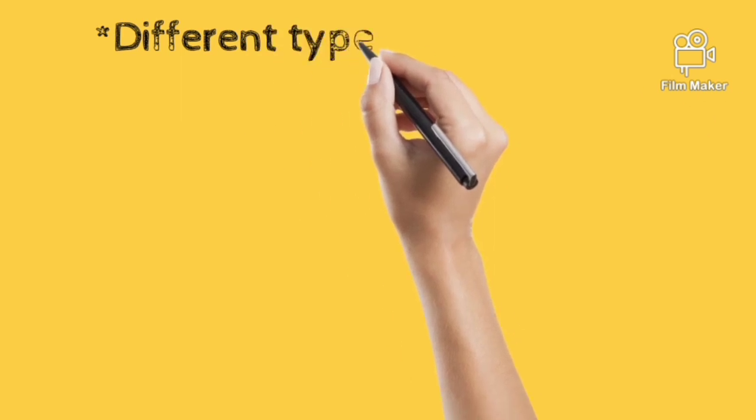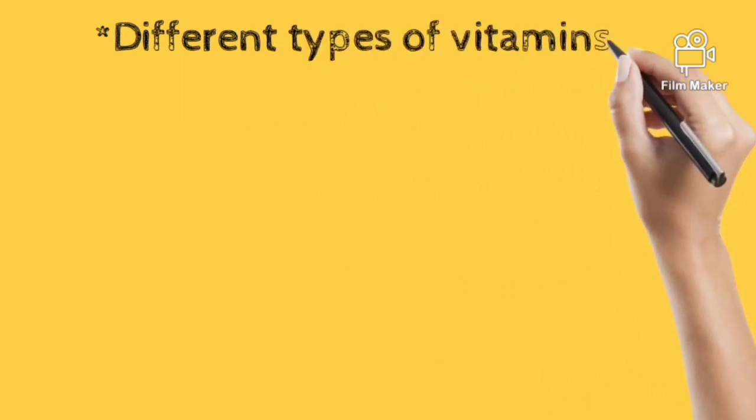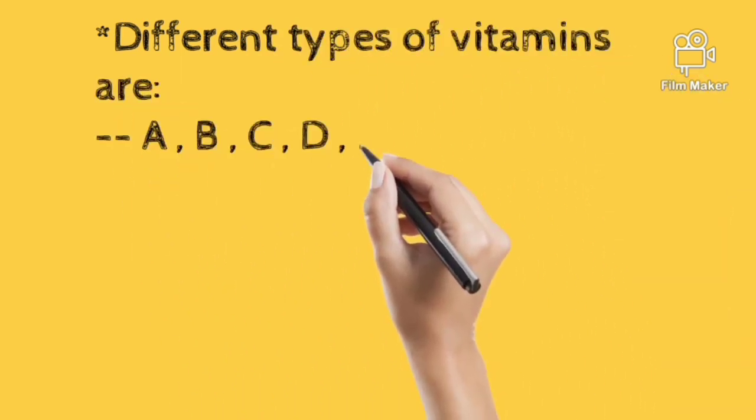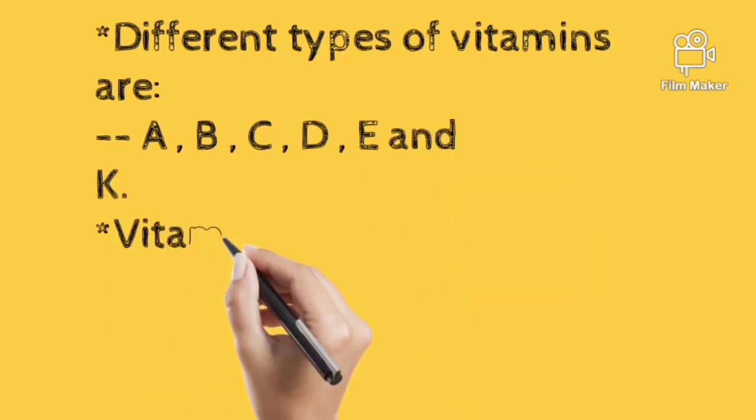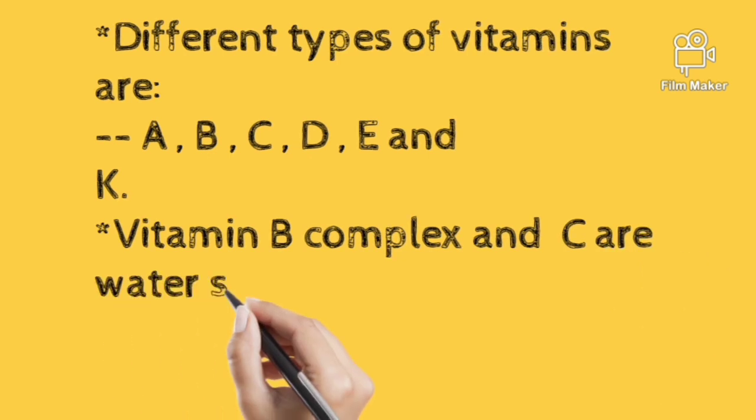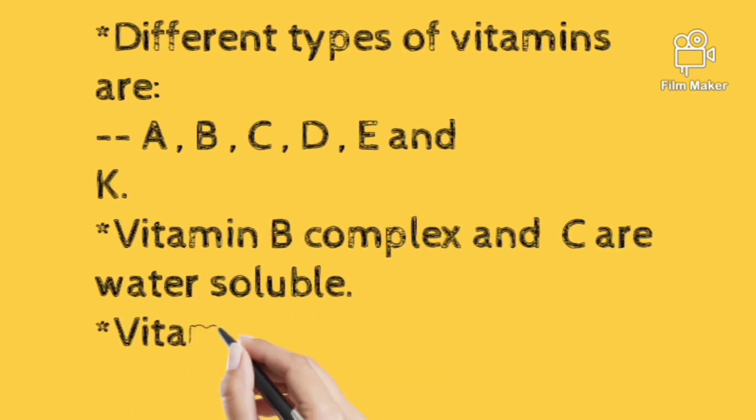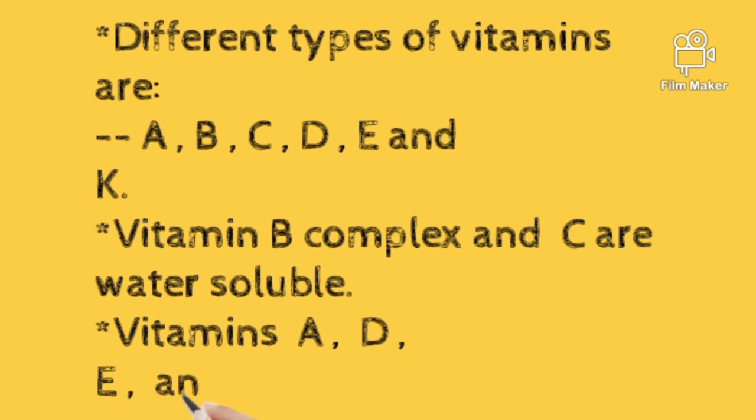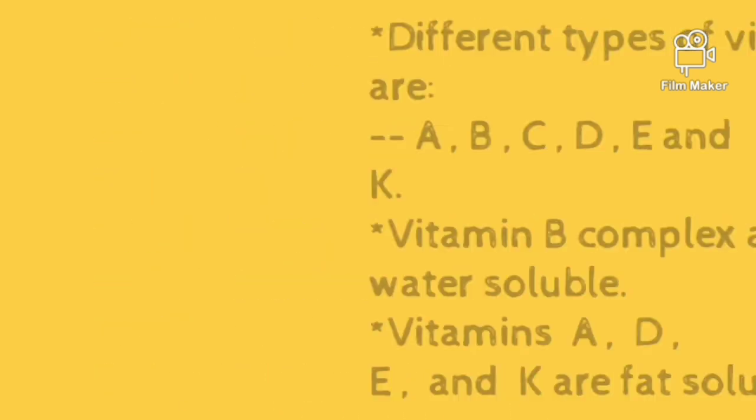Different types of vitamins are A, B, C, D, E and K. Out of which vitamins B complex and C are water soluble, and vitamins A, D, E and K are fat soluble vitamins.